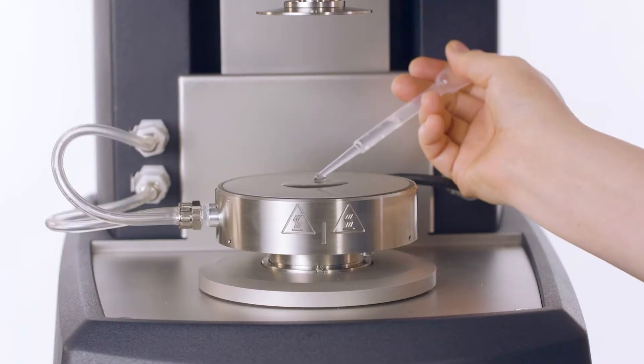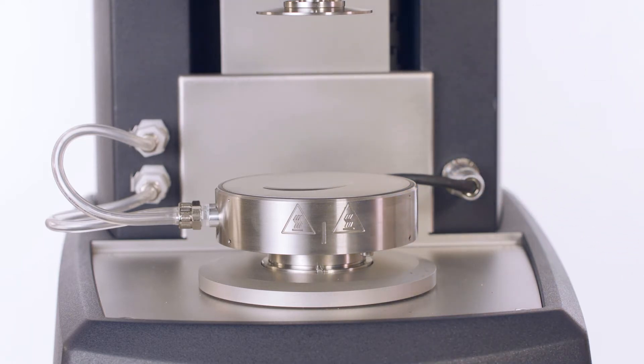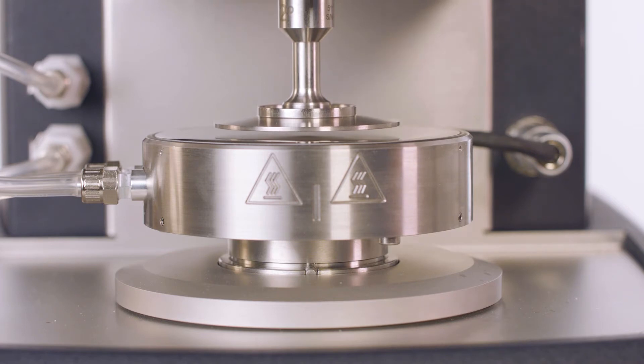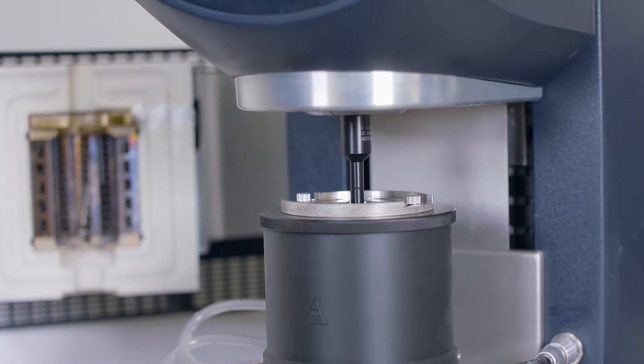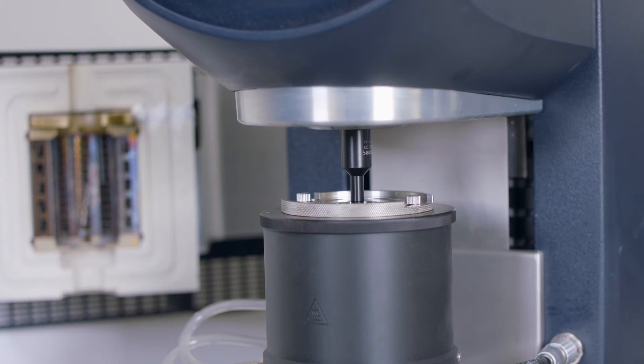In other geometries such as parallel plates or cone and plate, the sample may flow out of the gap or it can be subject to edge fracture at sufficiently high shear rates. In the concentric cylinder, the sample is secured within the container volume, allowing for both the characterization of low viscosity fluids as well as testing at high shear rates.